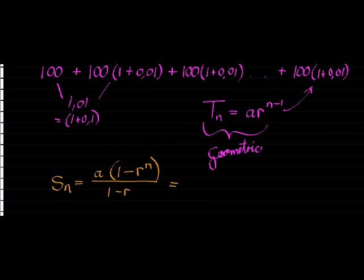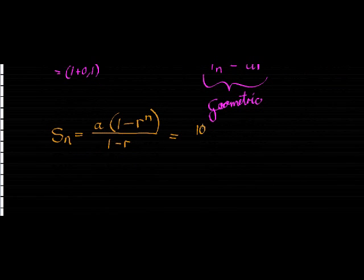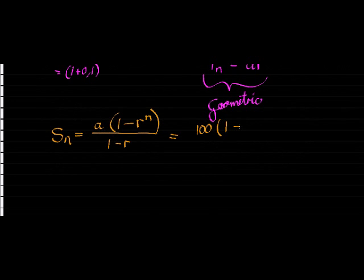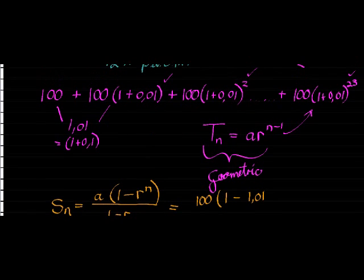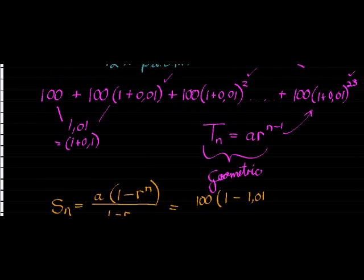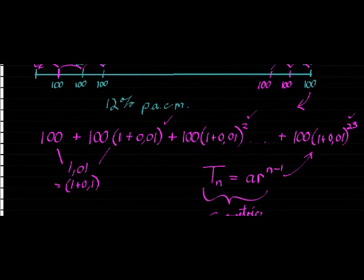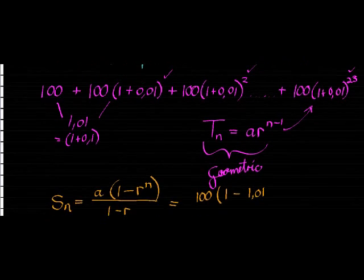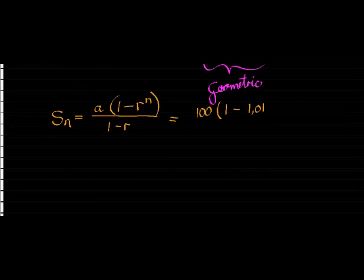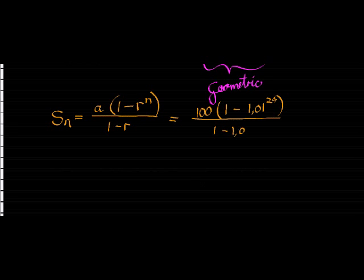Well, A is my first term. You see that is 100. 1 minus R is my constant ratio, which is 1.01 in this case, that bracket, to the power of N. N, in this case, is the number of terms. But just to keep in line with the story I was telling, is that that's the number of investments I made. I made 24 investments. Divided by 1 minus 1.01.